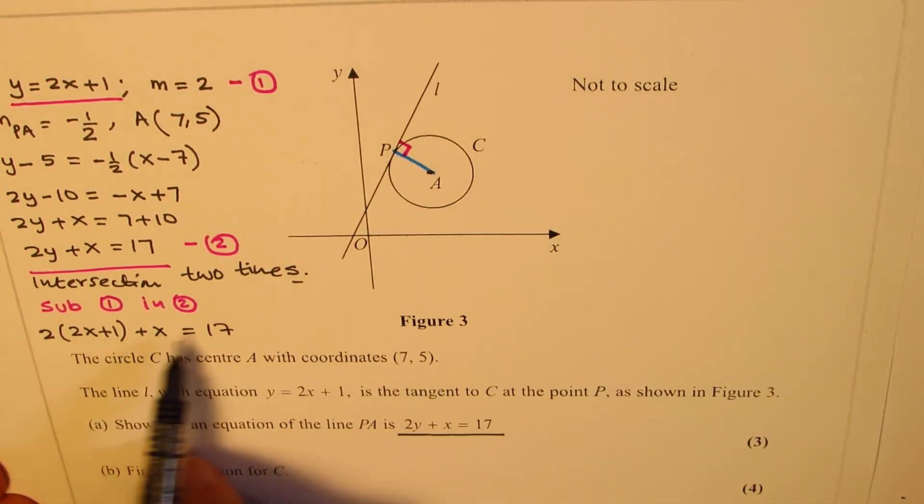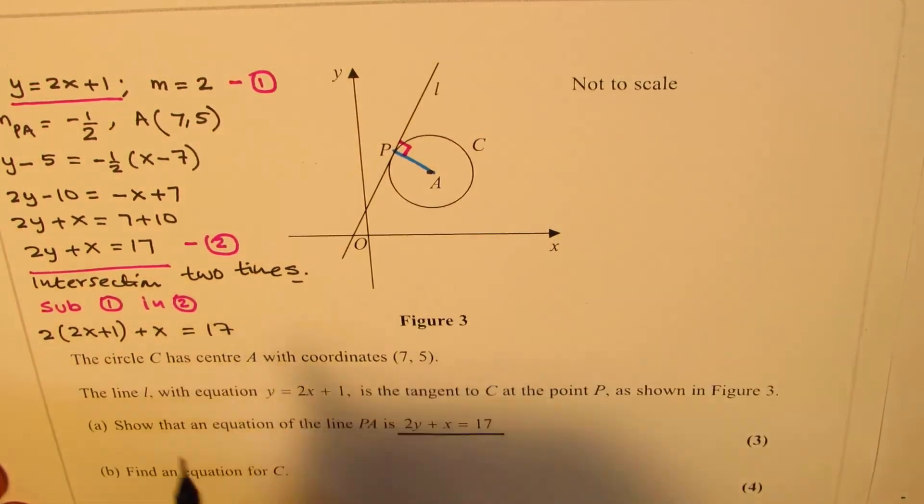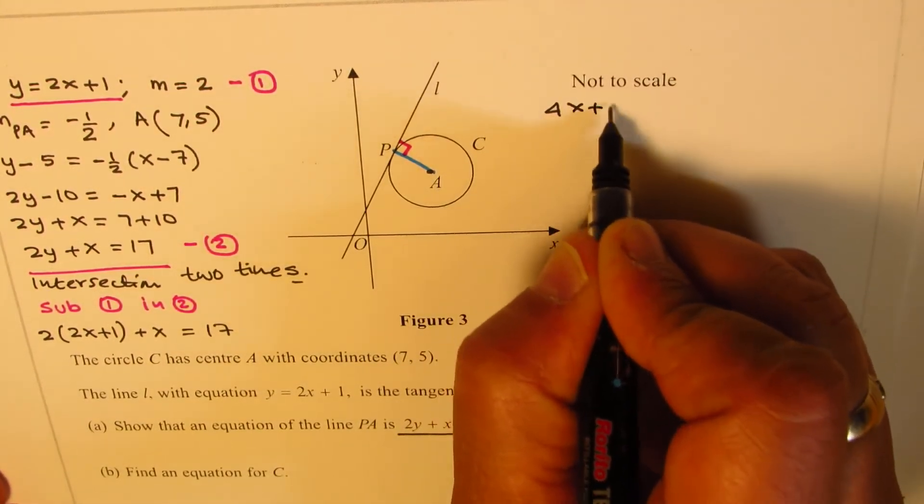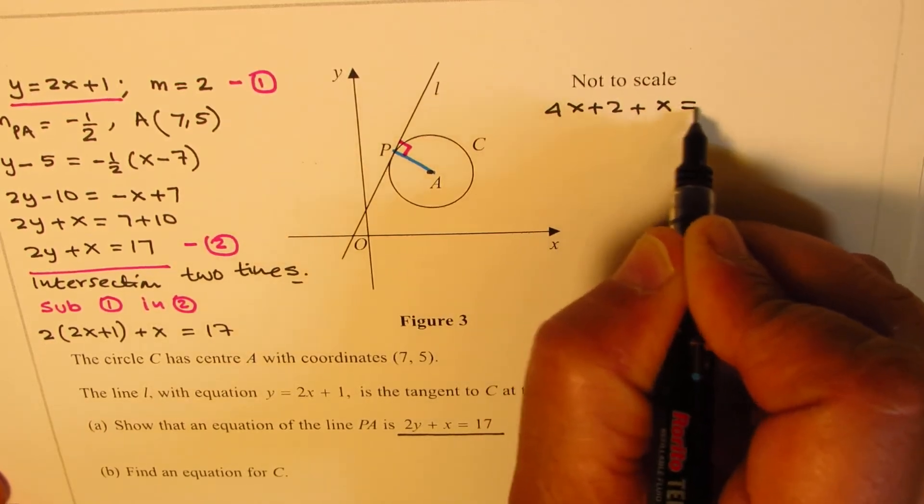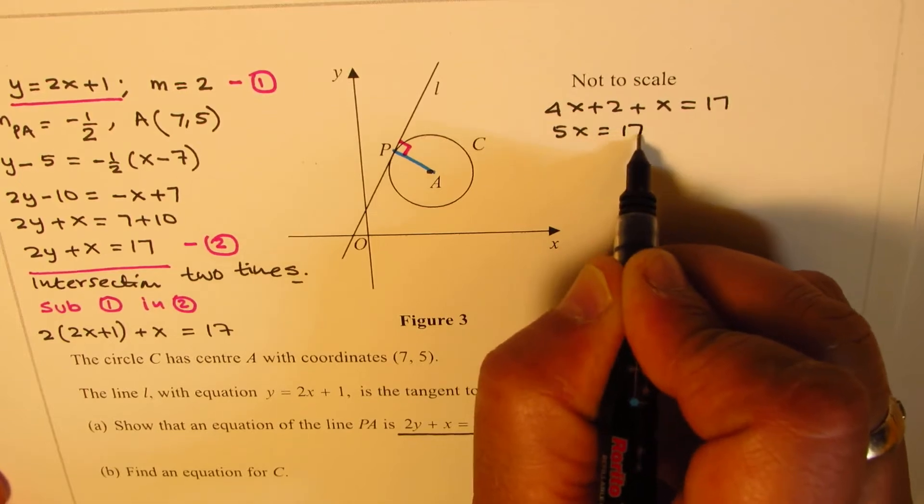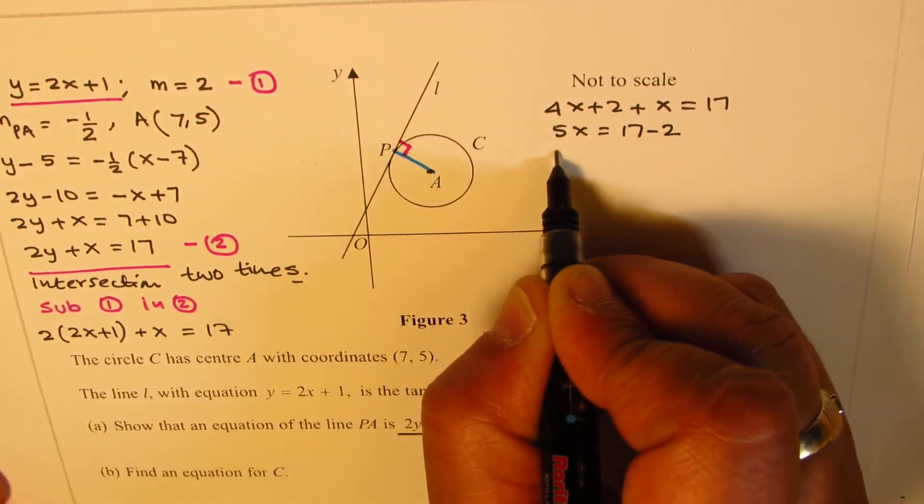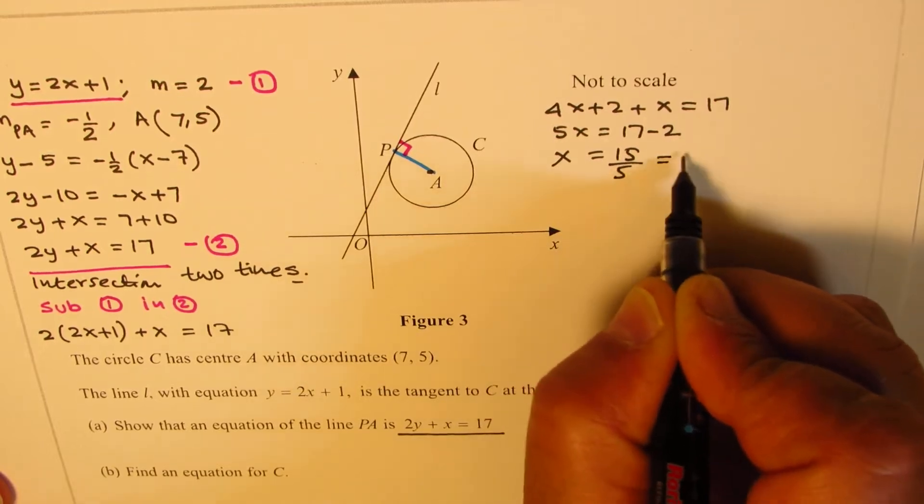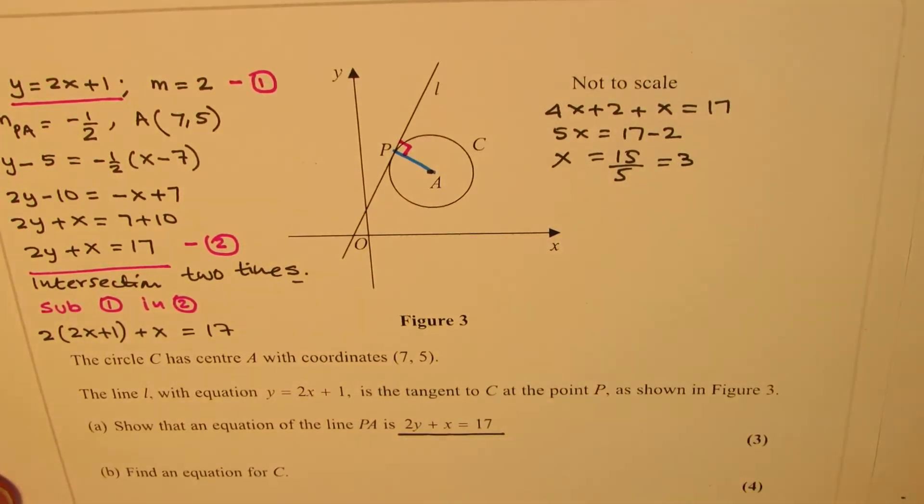Opening the bracket: 4x + 2 + x = 17. That gives us 5x = 17 - 2, so x = 15/5 = 3. We get the value of x.